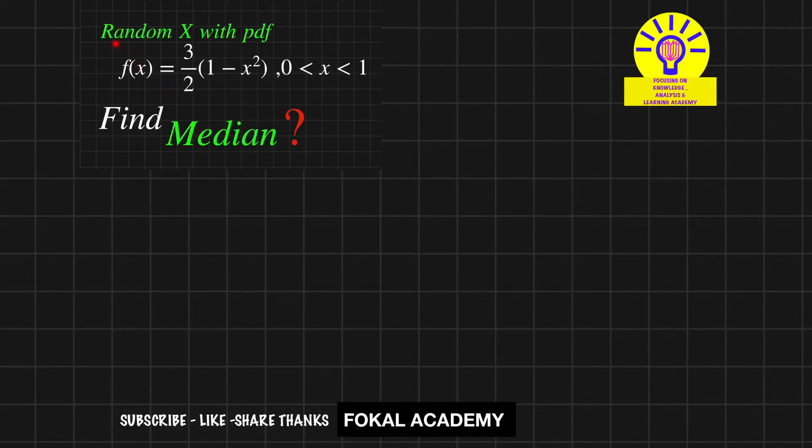In this problem, a random variable X with probability density function is given as f(x) equals 3/2 times (1 minus x squared) in the range 0 to 1. We need to find the median.